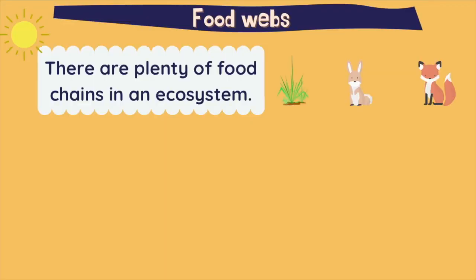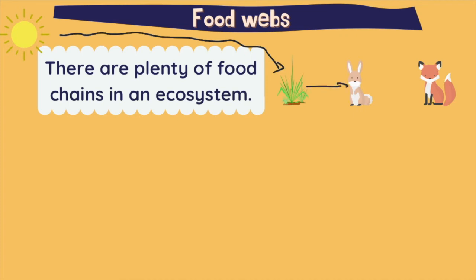Now that we know about food chains, let's have a look at food webs. There are plenty of food chains in an ecosystem. For example, in this food chain, the plant takes energy from the sun, then the rabbit eats the plants, so the rabbit takes the energy from the plant, and then the fox takes the energy by eating the rabbit. That is a simple food chain.